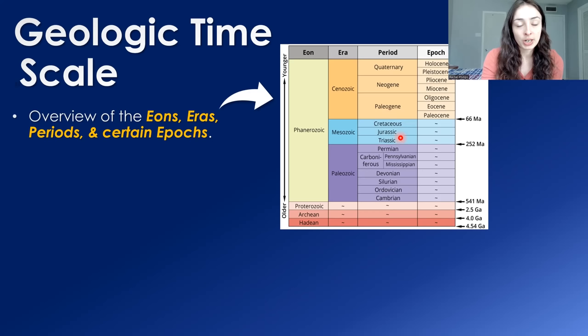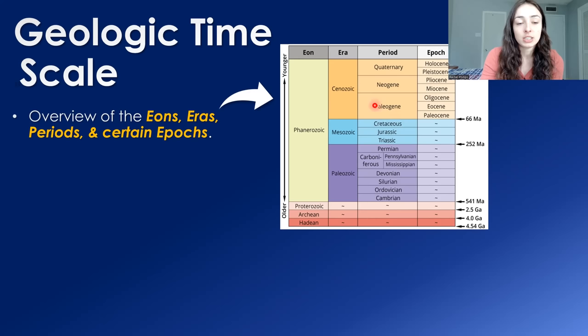The Paleogene and Neogene used to be combined into what was called the Tertiary. That's why it was always called the KT boundary for the Cretaceous-to-Cenozoic boundary and extinction event. But now we call it the KPG — the Cretaceous-Paleogene boundary. The K for Cretaceous has to do with the roots of the word.